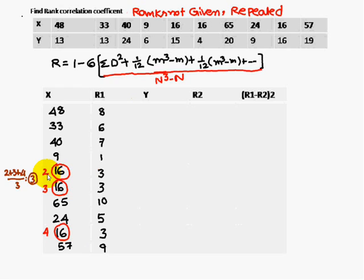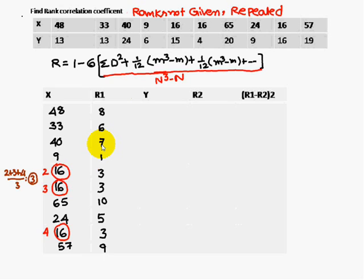For the next highest number, 24, ranks 2, 3, and 4 are already used, so we start with rank 5. After 24, the number 33 gets rank 6, then 40 gets rank 7, and so on up to rank 10.